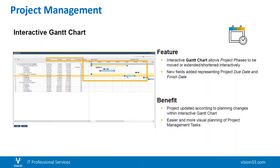What's been added is an interactive Gantt chart. The feature basically allows project phases to be moved, extended, or shortened interactively, and there are new fields added representing project due date and finish date. The big benefit is that projects can be updated according to planning changes within the interactive Gantt chart, making it much more visible, easier, and more visual for planning of project management tasks.